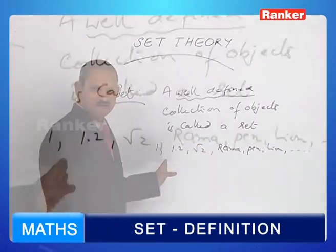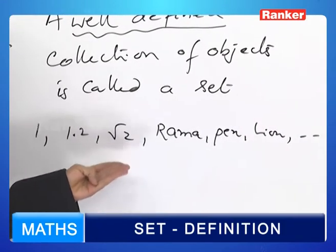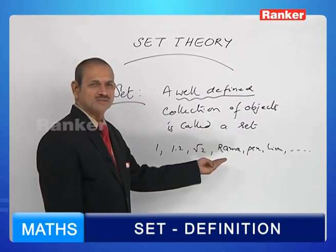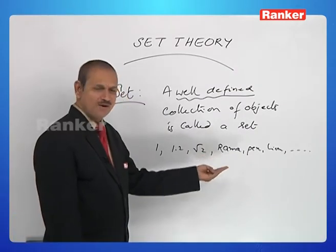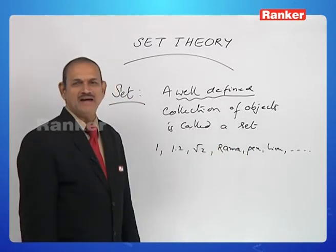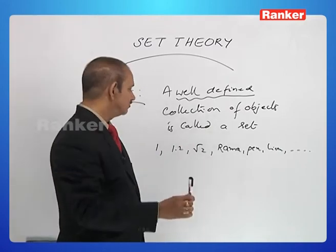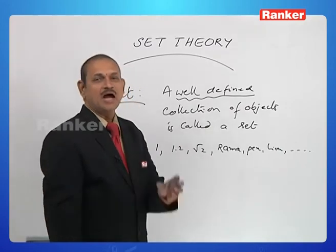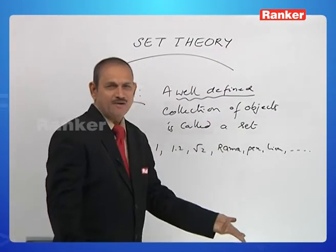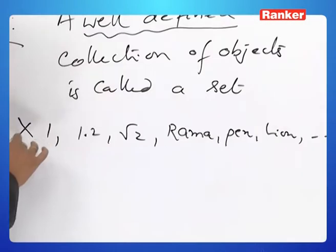Collection of natural numbers? No. Collection of decimal fractions? No. Collection of irrational numbers? No. The element Rama is the name of a male person. Is it a collection of names? No. Pen is an article, and Lion is an animal. Suppose a pencil were added — does that element belong to this collection? We cannot say. So we can say nothing about this collection.